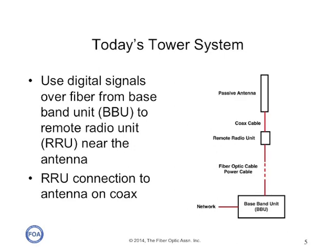Today's towers are moving to a digital fiber optic system, to a remote radio unit at the top of the tower that converts the digital signal to analog and drives the passive antenna over copper coax cable. The cables up the tower have fiber for the signal and electrical conductors to power the remote radio unit, usually inside an armored protective jacketing. The baseband unit on the ground connects to the network either by fiber optic cables or sometimes microwave antennas.